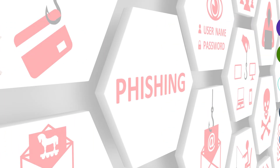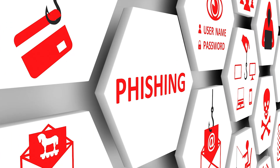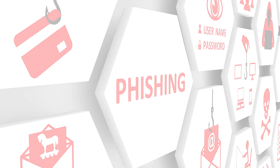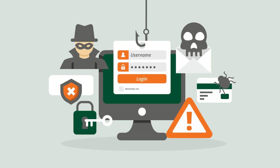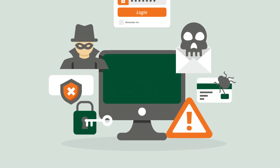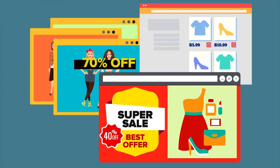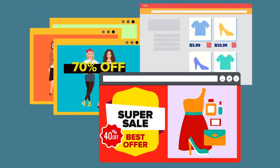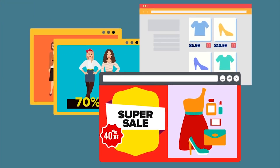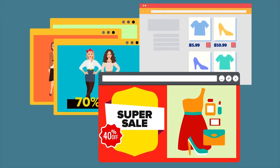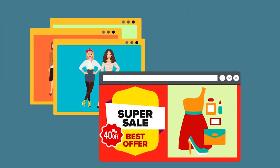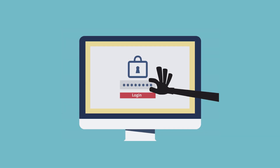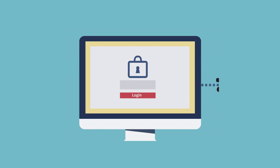Let's dive right into what phishing is and how to avoid the lure. The term phishing with a PH is a spin on the word fishing because criminals are dangling a fake lure — a legitimate-looking email, website, or ad — hoping users will bite by providing the information the criminals have requested.